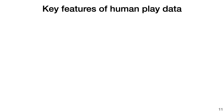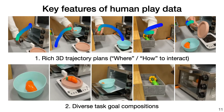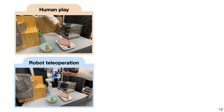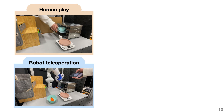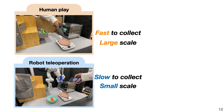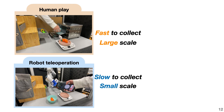There are two key features of human play data. Firstly, it offers rich 3D trajectory-level plans, indicating where and how to interact in the 3D environment. Secondly, since it is play data without specific goals, it covers diverse task compositions. When comparing human play data to traditional robot teleoperation data, human play data is much faster to collect, allowing us to gather large amounts of data in a short time.